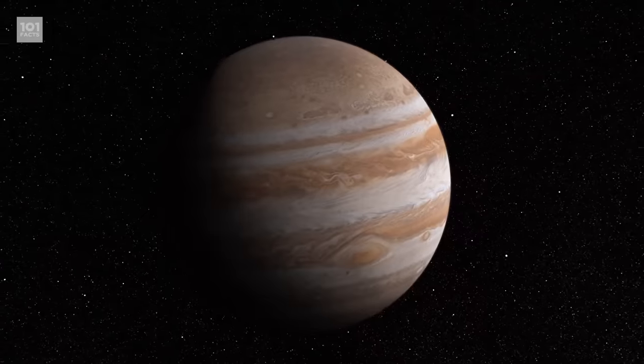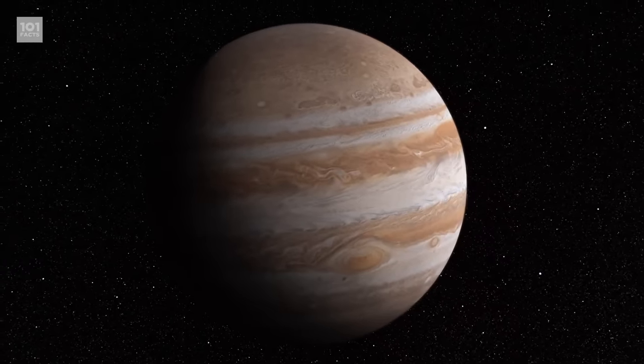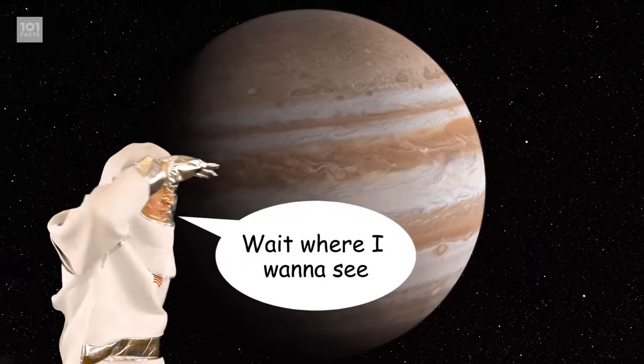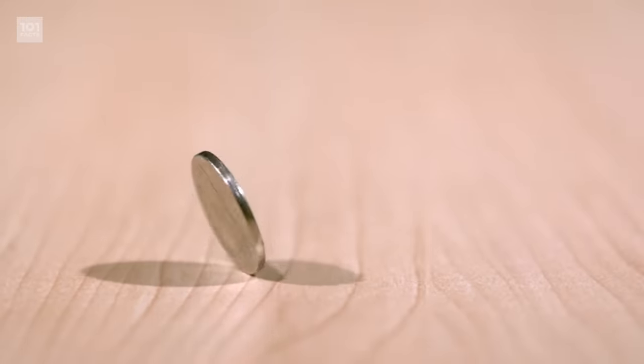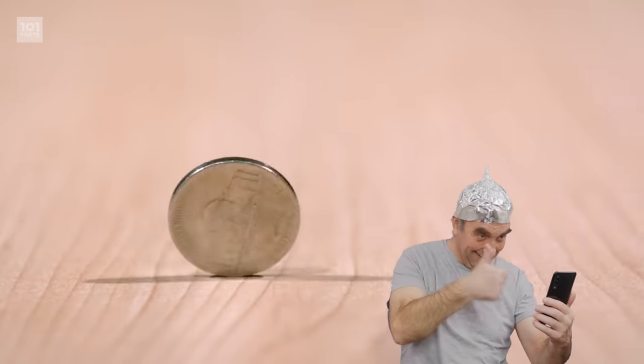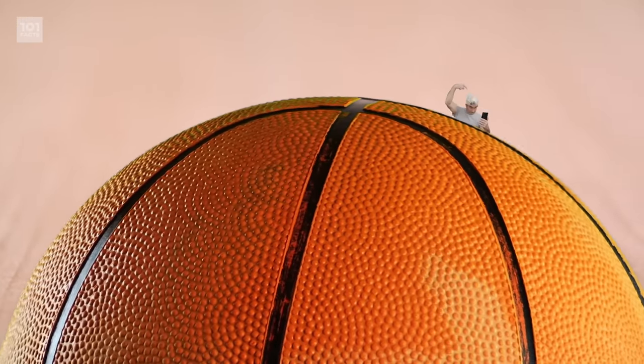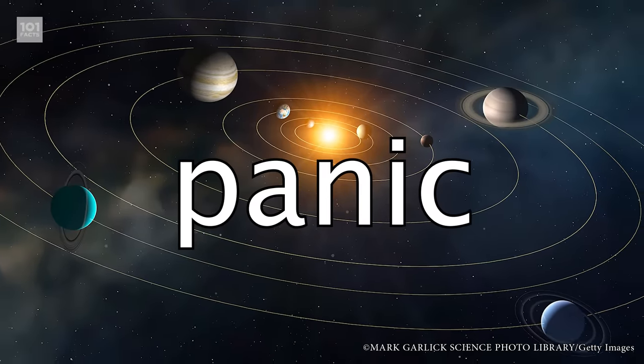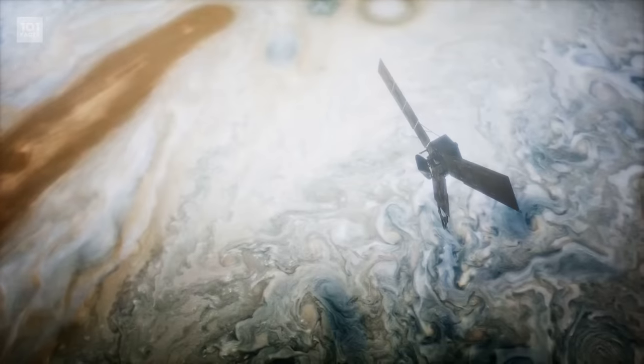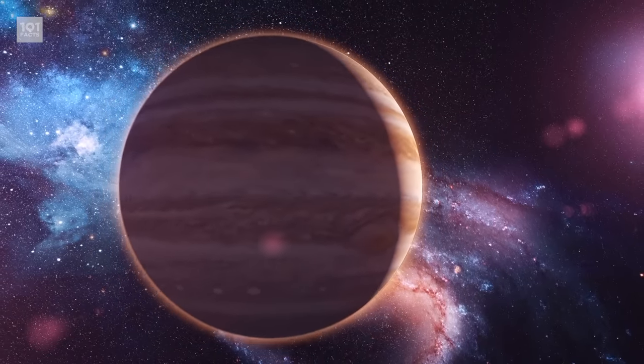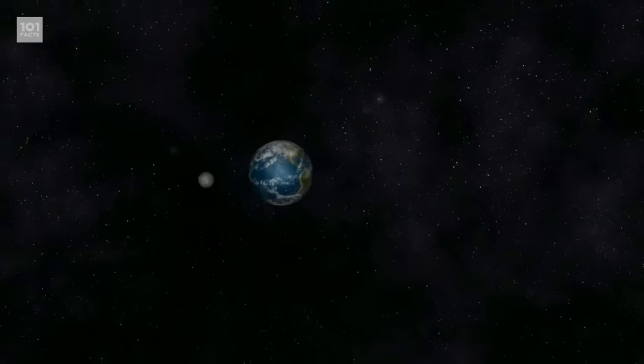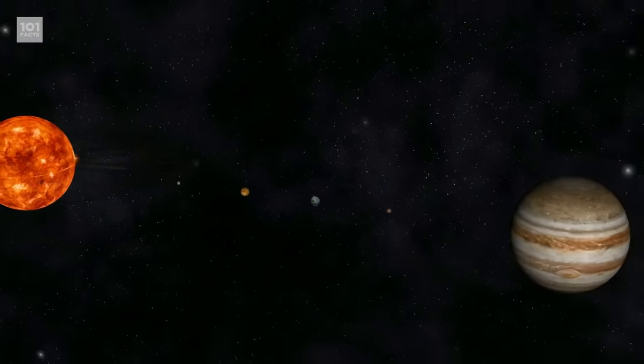Jupiter is the first of the outer planets, or giant planets, and boy does it earn the name giant. To put it in perspective for you, according to NASA, if the Earth was the size of a nickel, Jupiter would be the size of a basketball. It's probably not surprising that Jupiter is in fact the biggest planet in our solar system. It's so big, in fact, that it's two and a half times bigger than all the other planets combined.